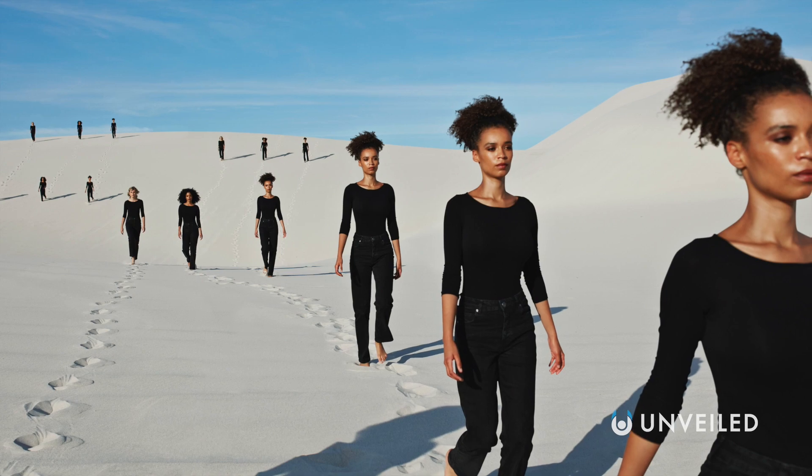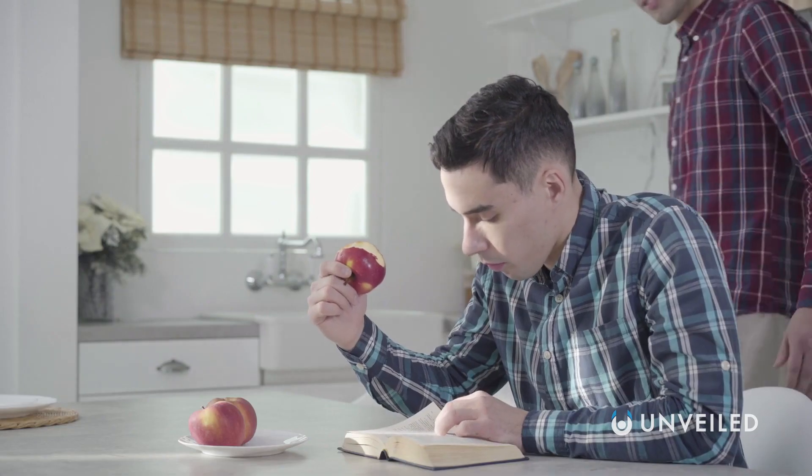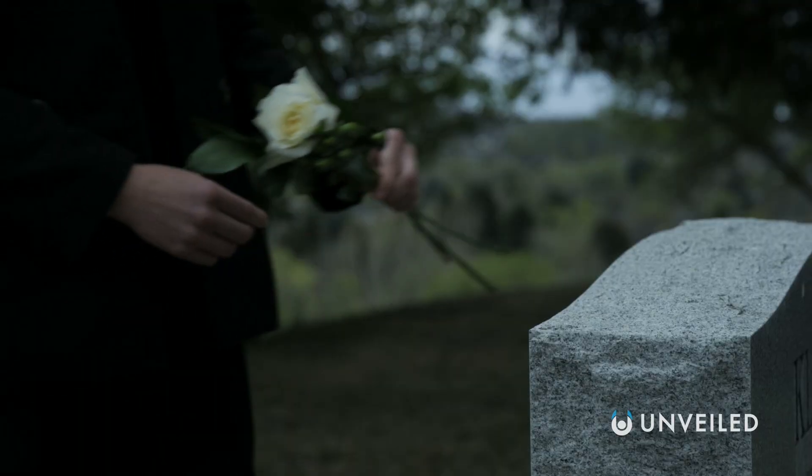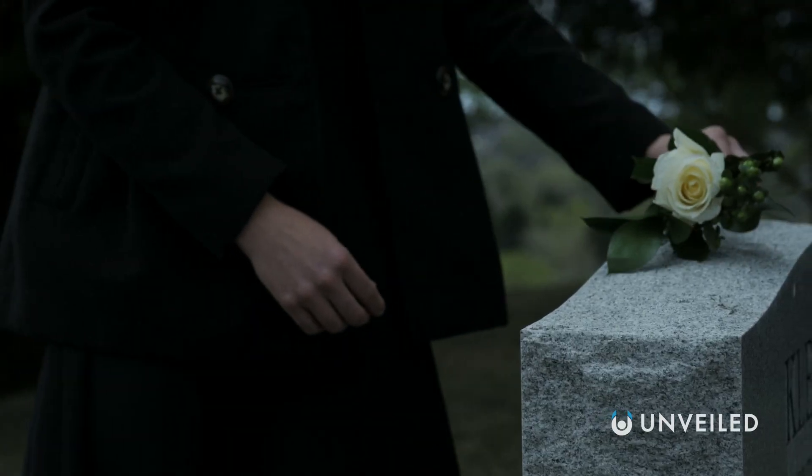Are you responsible for what they do or don't do? If they give to charity, is it your generosity they're showing? If they break the law, are you to blame? And, more fundamentally, what happens if another version of you dies?